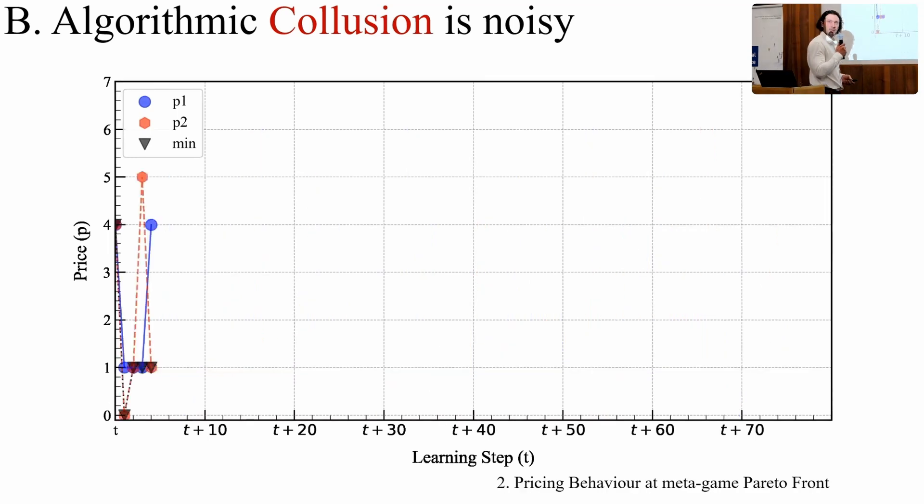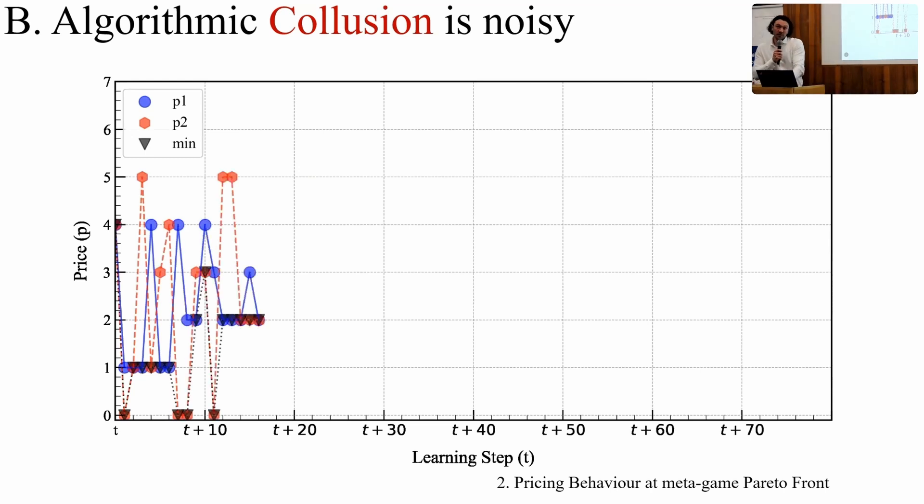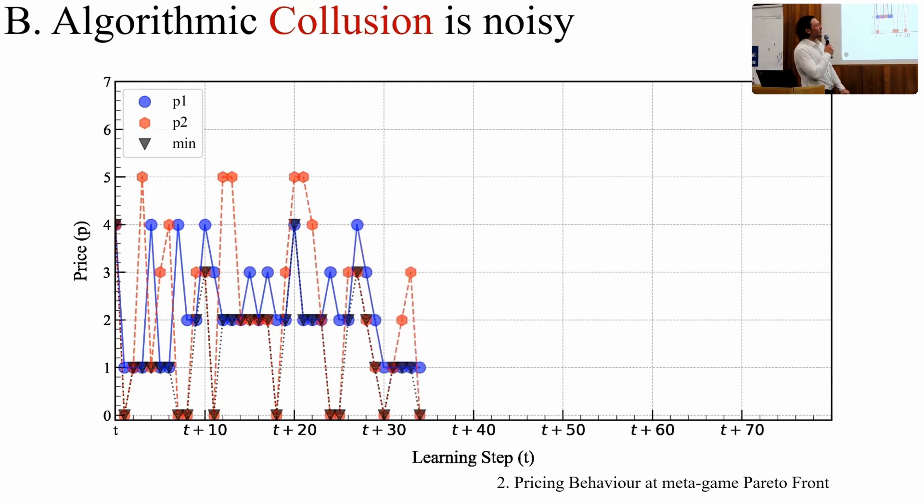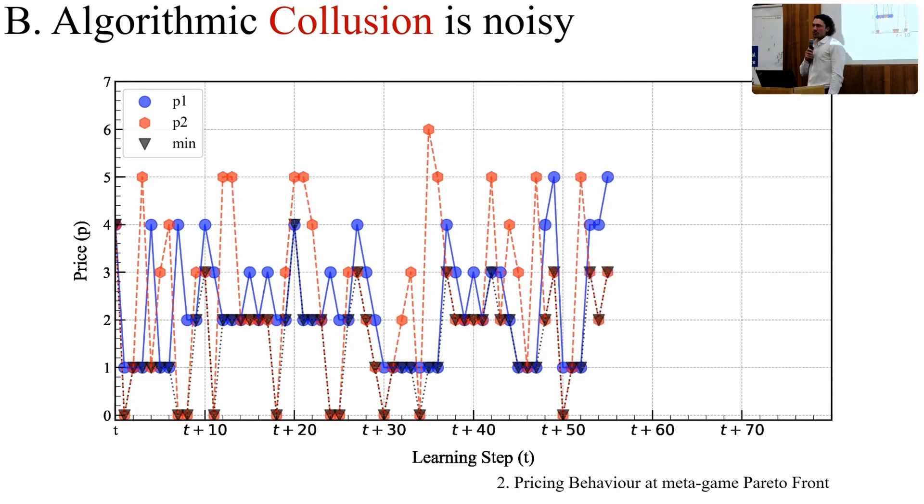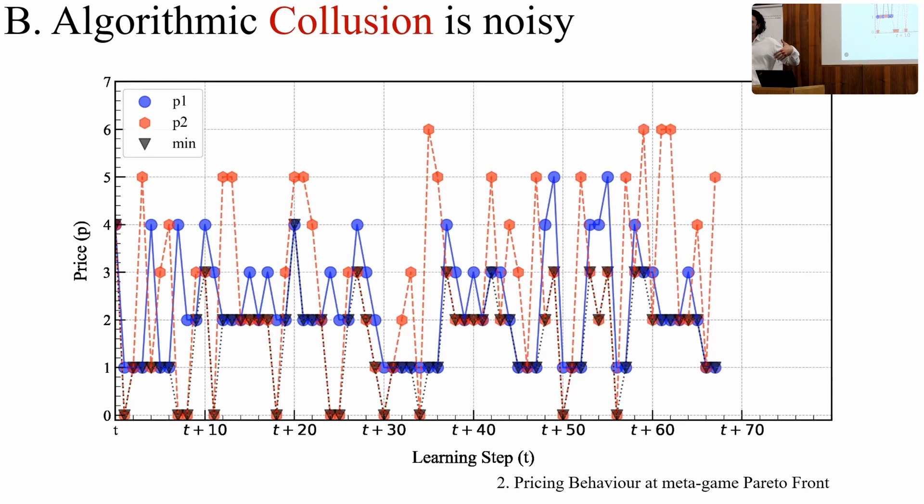Whereas at the Pareto front, where you had these highly asymmetric combinations which achieve even higher super competitive prices, we find somewhat similar behavior, but now there are intermittent regions of stability. They're able to consistently set higher prices. It's still rather noisy, but there are also somewhat larger cycles in this behavior.